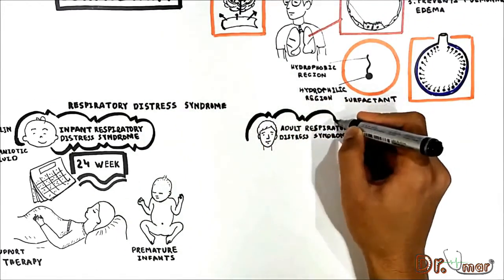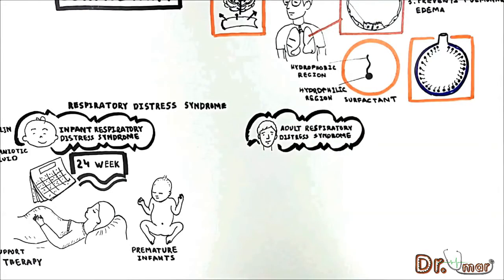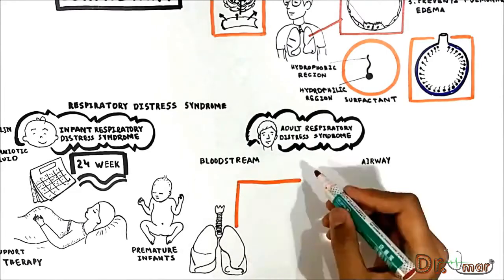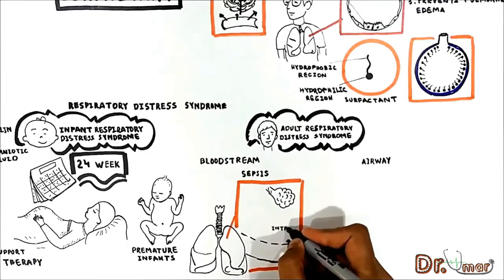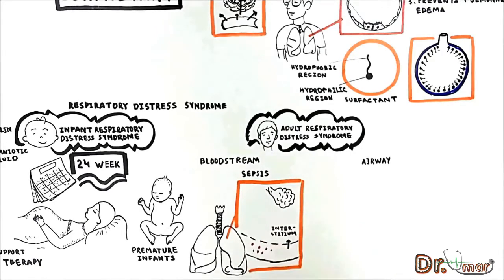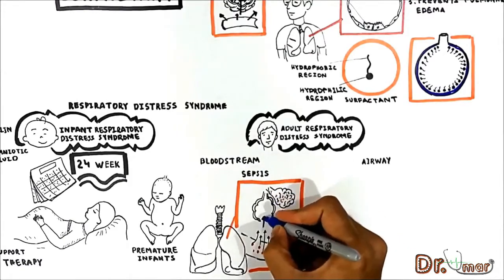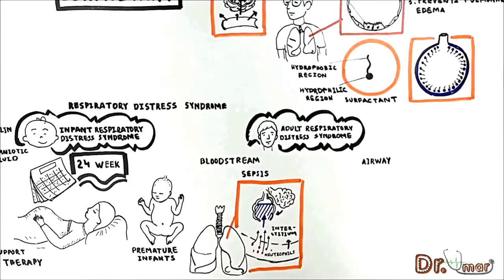As for adult respiratory distress syndrome (ARDS), it is an acute injury to the alveolar membrane. There are many causes of ARDS, which mainly cause injury via two ways: via the bloodstream and via the airway. For example, sepsis causes injury to the pulmonary capillary endothelium, leading to interstitial edema and increased lymph flow. In addition, neutrophils leak out of the capillary into the interstitium, causing damage to the alveolar membrane, and interstitial proteins with fluid leak out into the alveoli, resulting in pulmonary edema. Furthermore, proteins that seep into the alveoli reduce the effectiveness of surfactant.